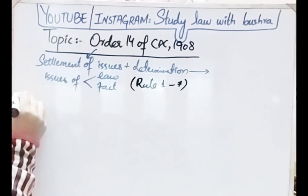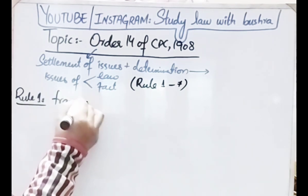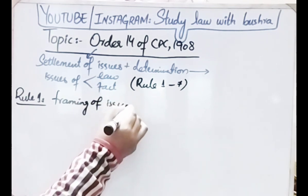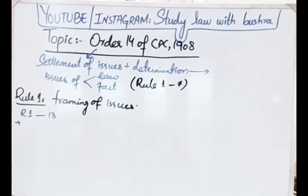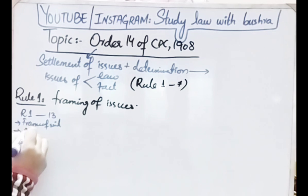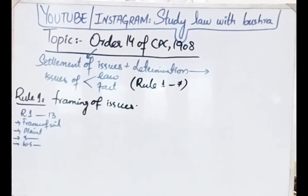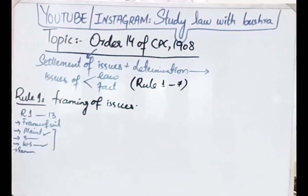Rule 1 deals with framing of issues. Before discussing Rule 1, recall that from Order 1 to Order 13 we discussed how to frame a suit, how to file a plaint, how summons are issued to the defendant, how the defendant gives a written statement, and how parties come to court for examination under Order 10. At the first hearing, the court frames issues — what the dispute is between the parties.